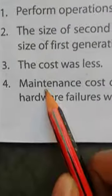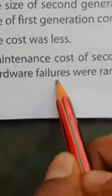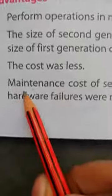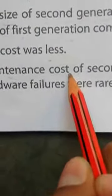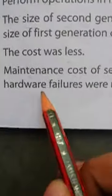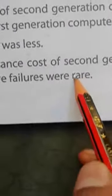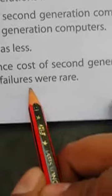Fourth, maintenance cost of second generation computers was less because hardware failures were rare. Maintenance means रख रखाव. Cost means कीमत. Less means कम. दूसरी PD के computer की रख रखाव की लागत कम थी. Because, क्योंकि hardware failures were rare. Rare means दुर्लब. Failure means विफलता है. क्योंकि hardware विफलता दुर्लब थी.